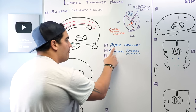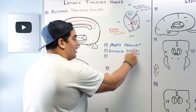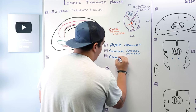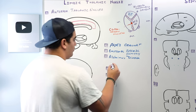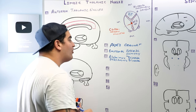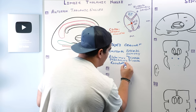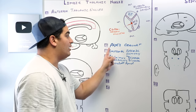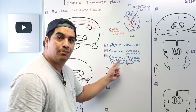Whenever there is damage to Papez's circuit and you have loss of this emotional episodic memory, particular diseases can manifest. These include Alzheimer's disease — which is basically a disease of the memory aspect — Parkinson's disease, and Korsakoff syndrome. Korsakoff syndrome usually occurs in alcoholics and is due to a thiamine deficiency. So the anterior thalamic nuclei are involved in emotional episodic memory via Papez's circuit, and damage leads to loss of episodic memory in conditions such as Alzheimer's, Parkinson's, and Korsakoff syndrome.